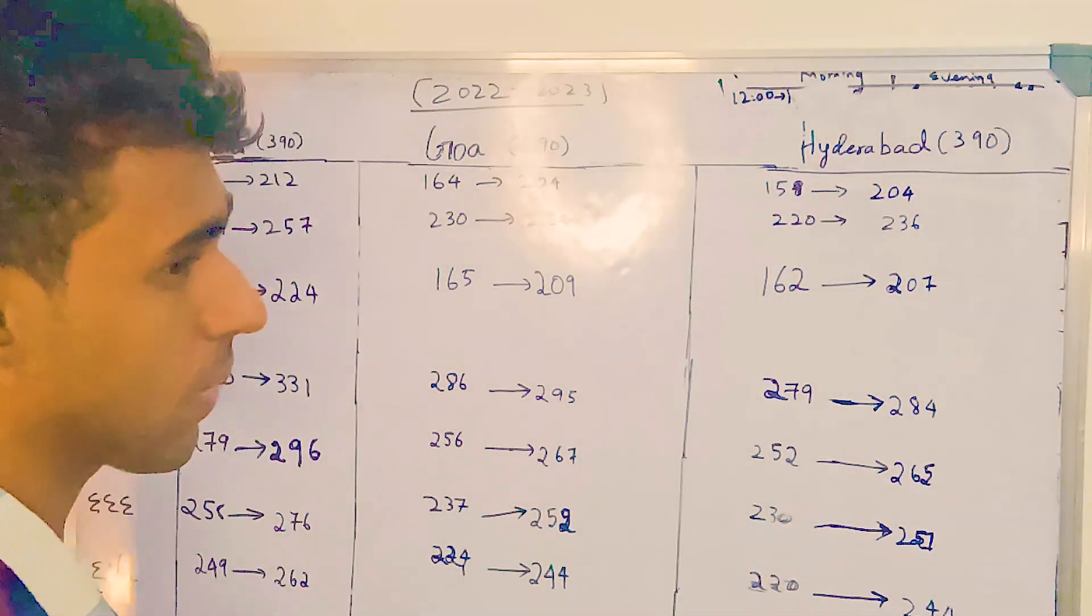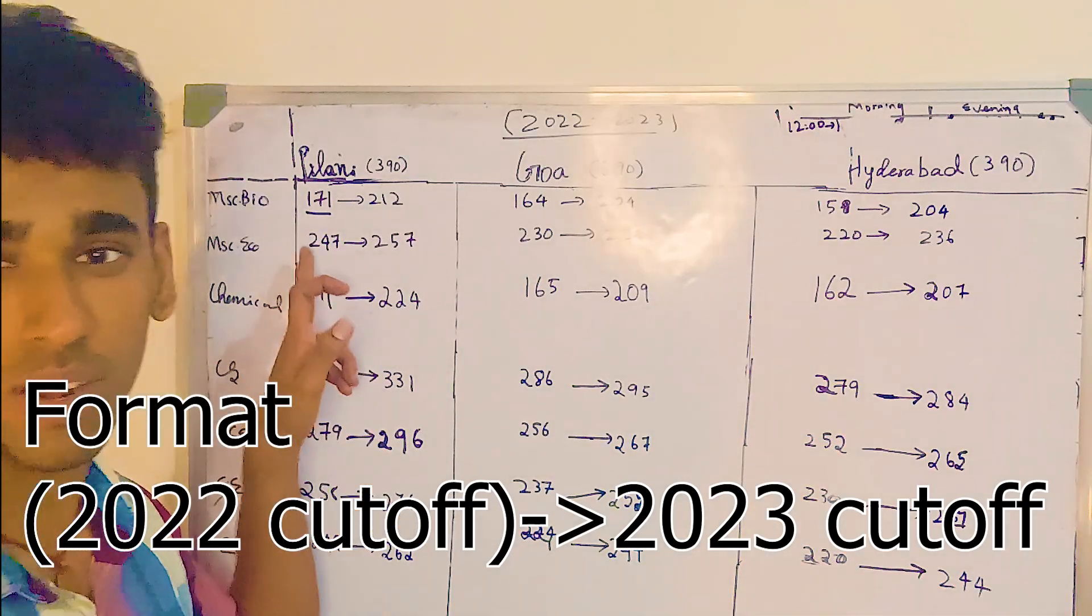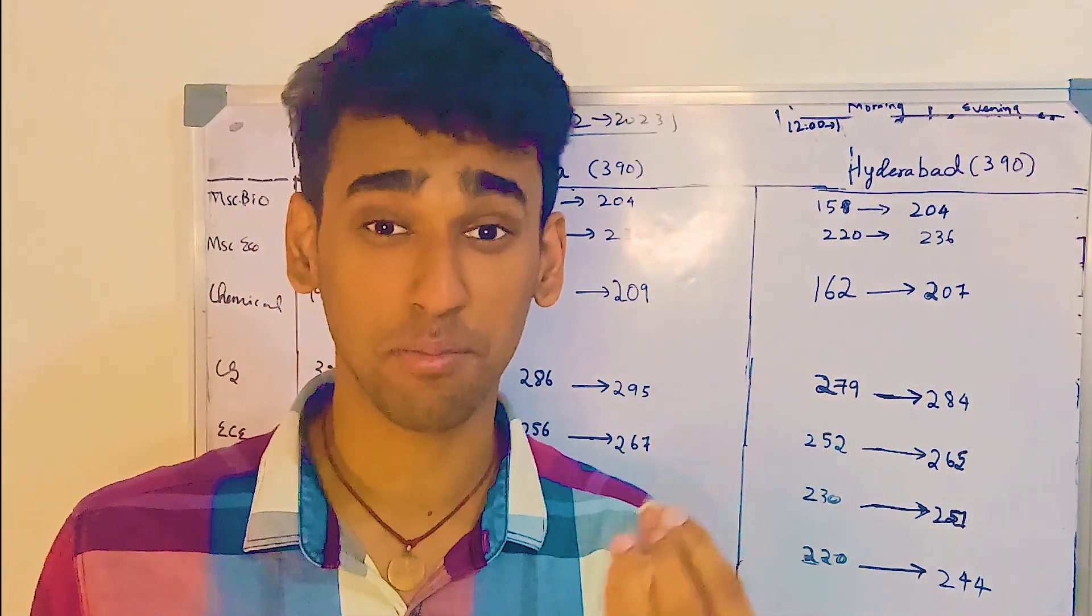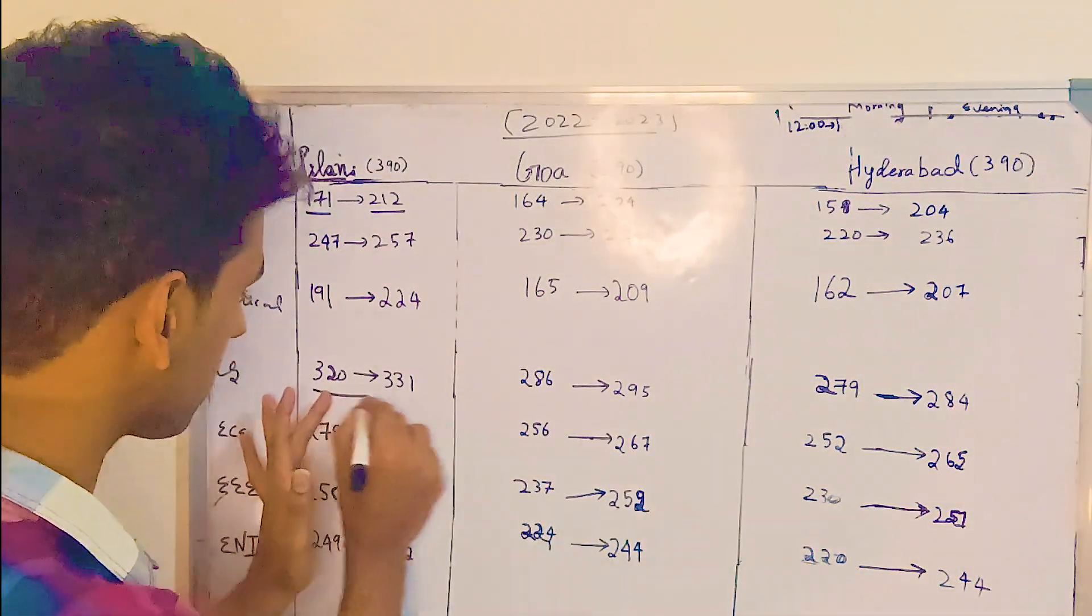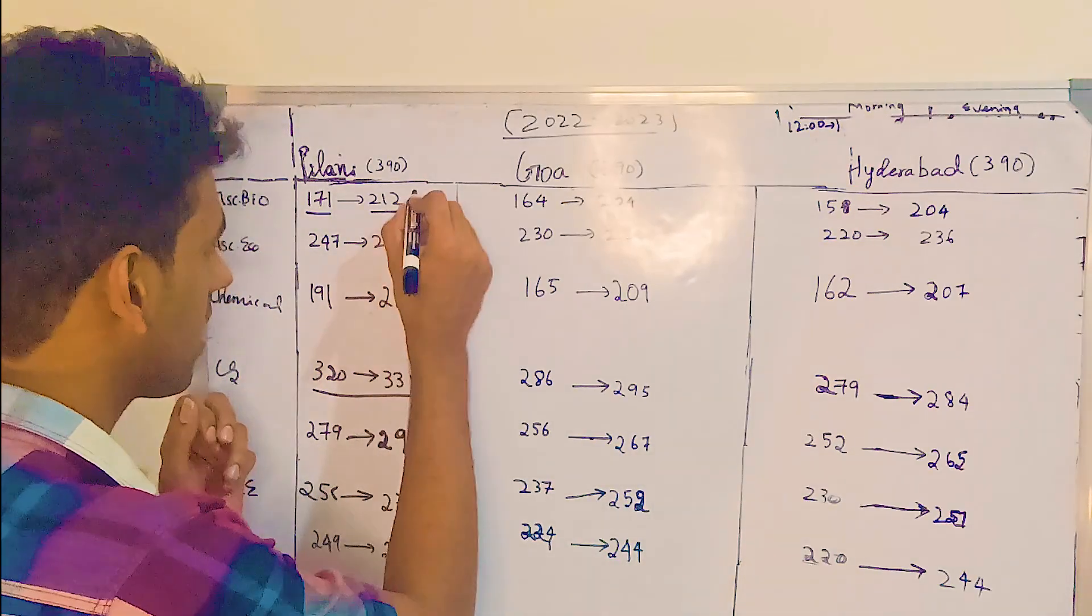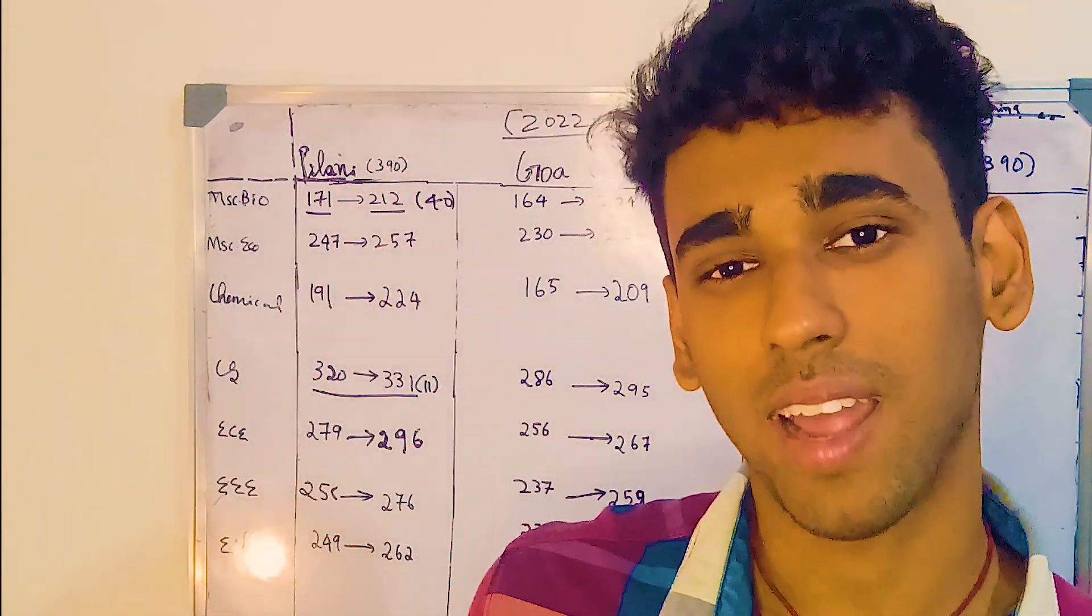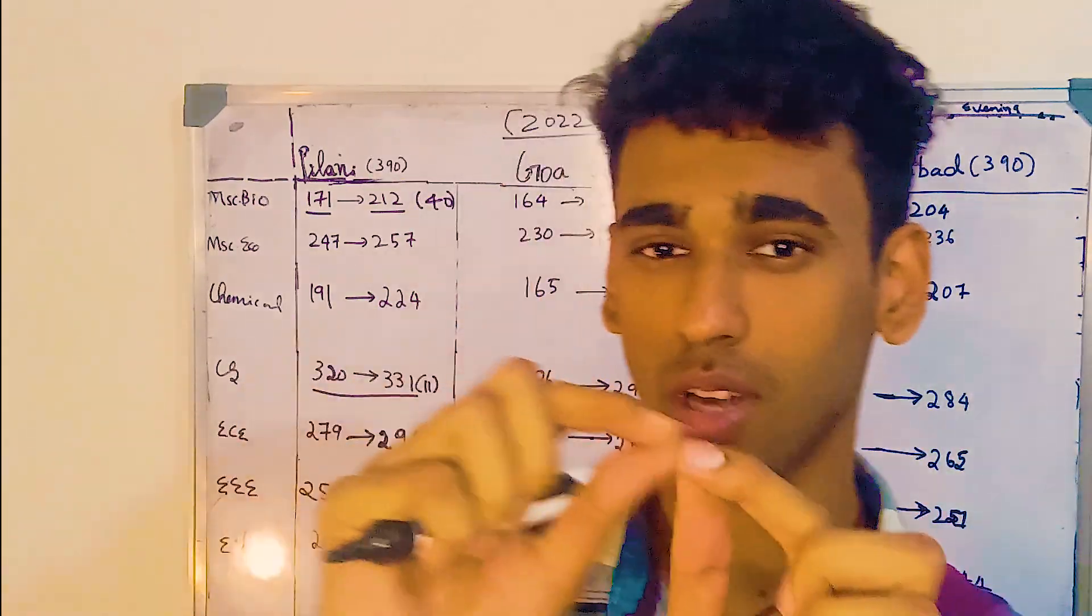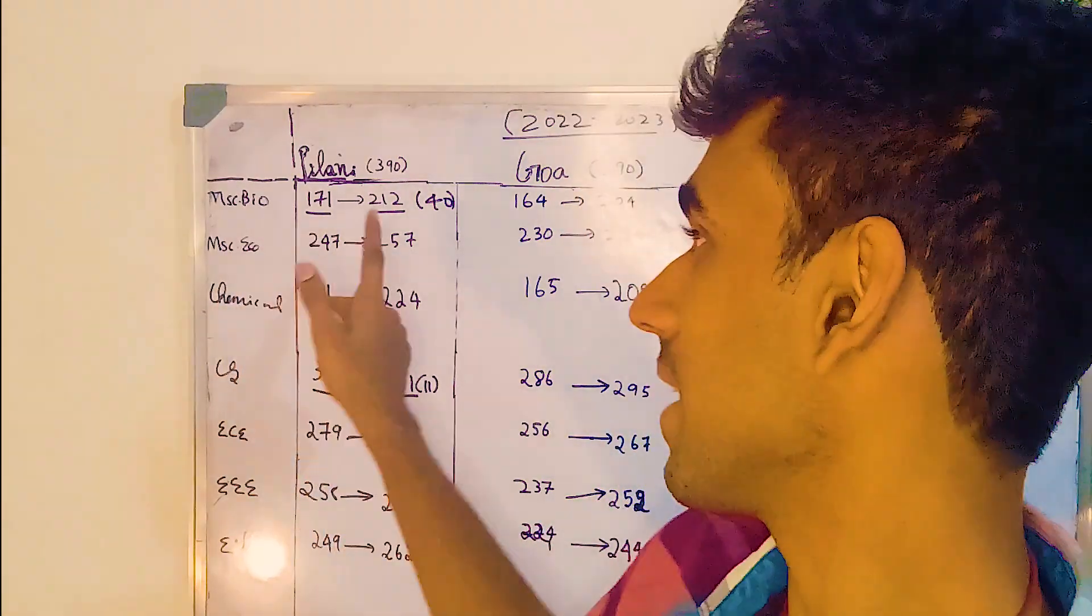In 2022, the cutoff was significantly less. The cutoff for MSc Bio in 2022 was 171, and in 2023 was 212 - almost a 40 mark increase in one year. Similarly for Computer Science, in Pilani campus, the cutoff went from 320 to 331, an 11 mark increase. The real reasons for the cutoff dropping in 2022 is not known, but I think the major factor is an increased fee hike in 2022. In 2023, there wasn't as much of a fee hike.